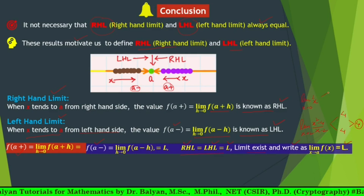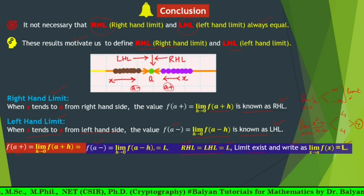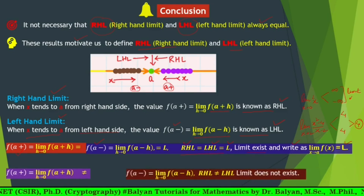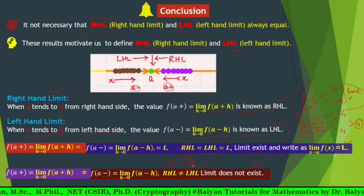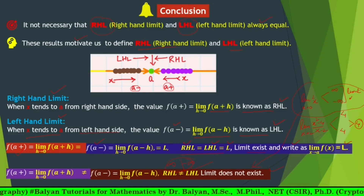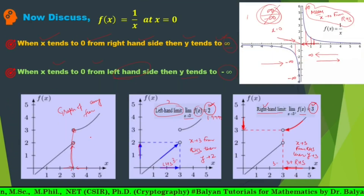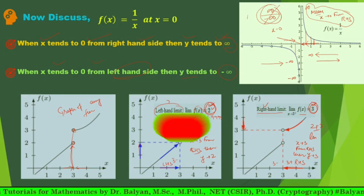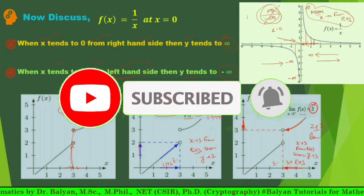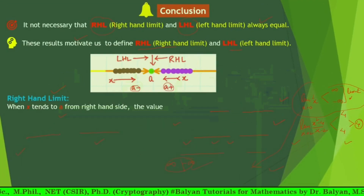This is the limit which is positive infinity and minus infinity. So what do we say? Limit does not exist. This is the second case, because one limit is infinity and the other is minus infinity. In the third case, the left-hand limit is 2 and the right-hand limit is 3. Since 2 is not equal to 3, the limit does not exist. It is now clear. Thank you for watching.